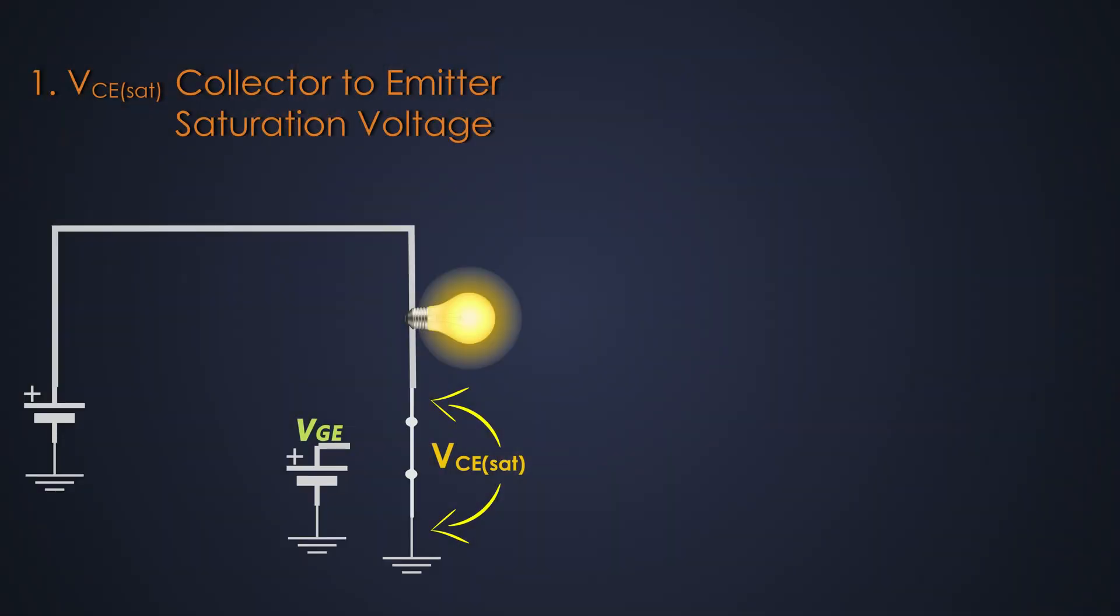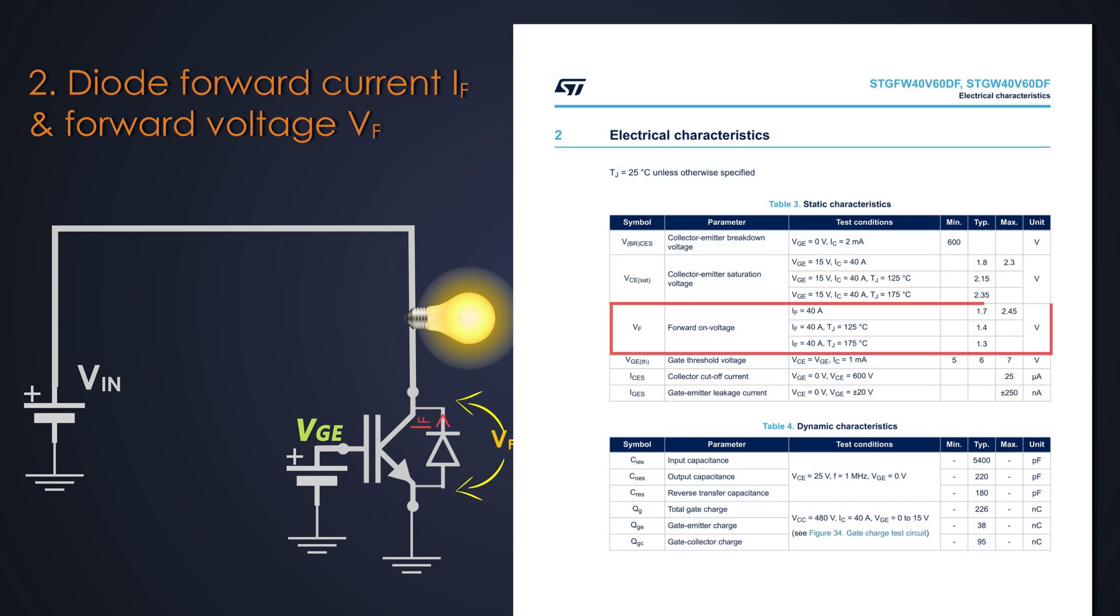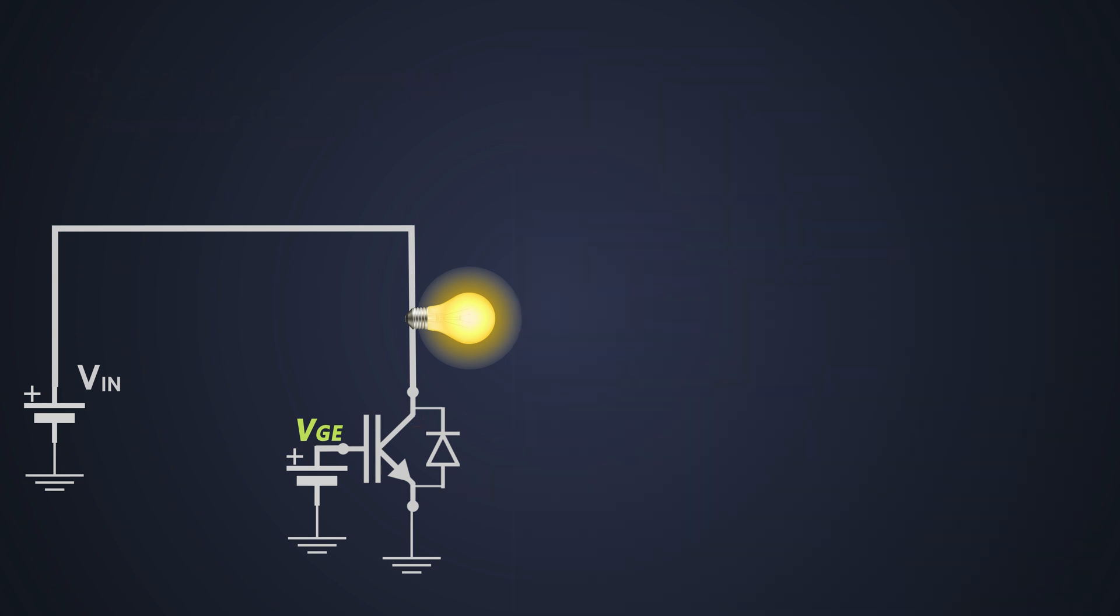Power is power. Well, power is nothing but the product of voltage and current. Later, diode forward current and forward voltage. These are the parameters of a freewheeling diode connected antiparallel to the IGBT, which comes in handy during the inductive type of loads.